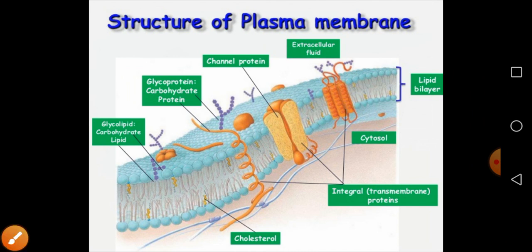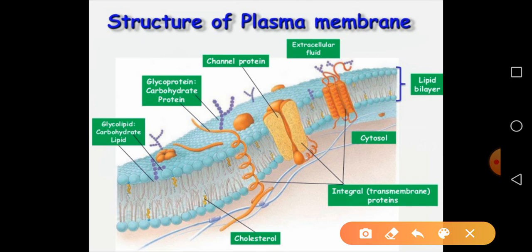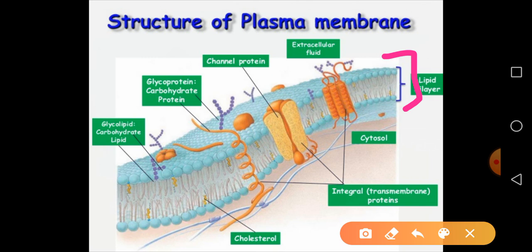You can now see the structure of the fluid mosaic model clearly. Here is the cholesterol present in the plasma membrane. Before the cholesterol, you can see the lipid bilayer, which is the most important component of the plasma membrane. There are two leaflets: the outer leaflet and the inner leaflet. This is the extracellular fluid — outside the cell — and this is the integral portion.